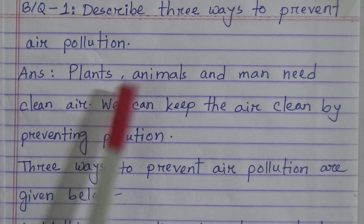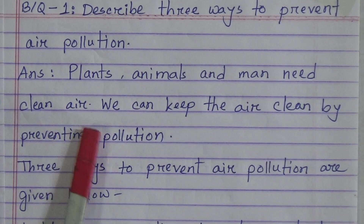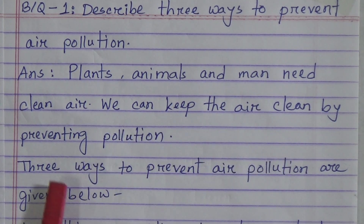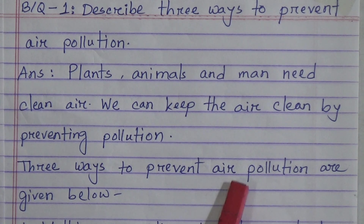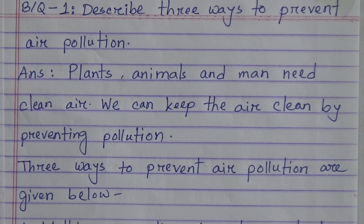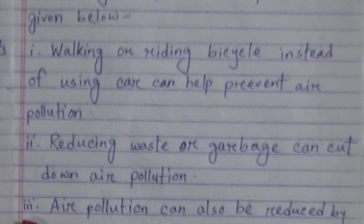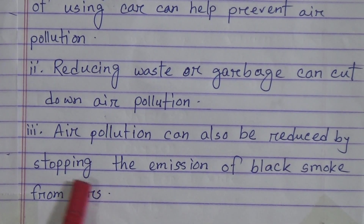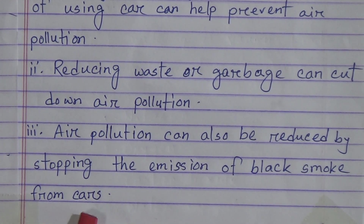Broad question number one: describe three ways to prevent air pollution. Answer: plants, animals, and men need clean air. We can keep the air clean by preventing pollution. Three ways to prevent air pollution: number one — walking or riding a bicycle instead of using a car can help prevent air pollution. Number two — reducing waste or garbage can cut down air pollution. Number three — air pollution can also be reduced by stopping the emission of black smoke from cars.